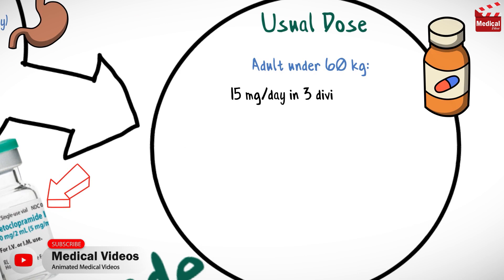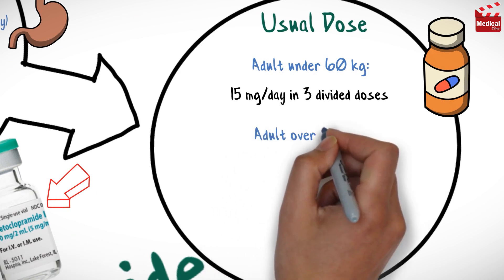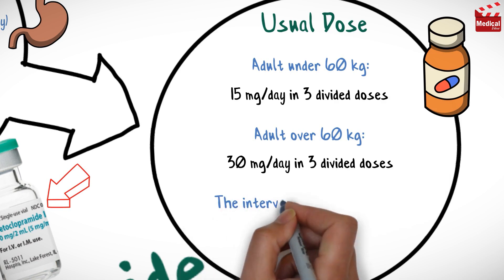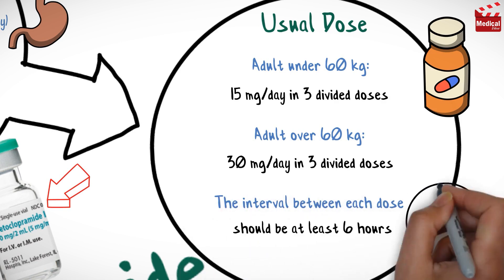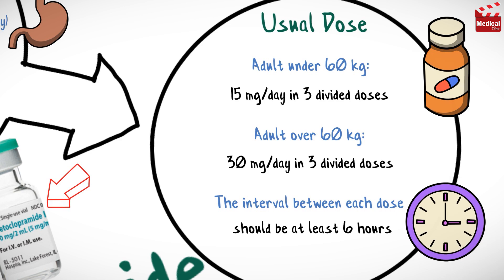The usual dose of metoclopramide for adults under 60 kilograms is 15 milligrams per day in three divided doses, and for adults over 60 kilograms, 30 milligrams per day in three divided doses. The interval between each dose should be at least six hours, even in the event of vomiting.